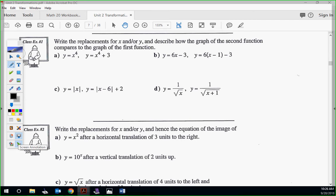So write the replacements for x and/or y, and describe how the graph of the second function compares to the graph of the first function. So what happened from this one to that one is up 3, or plus 3. That's what was changed. Took your x to the fourth, and you added 3 to it. That's going to be an up 3 or a vertical change of 3. You can write it as y minus 3 as well if you want to see what the change was. I think just writing it in words is fine as well.